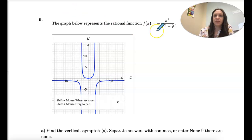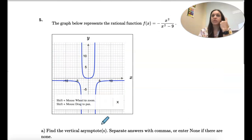So number five, we have a function and the graph. We want to find the vertical asymptotes and the horizontal.